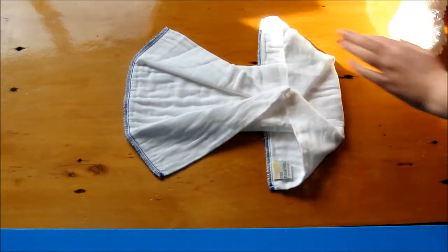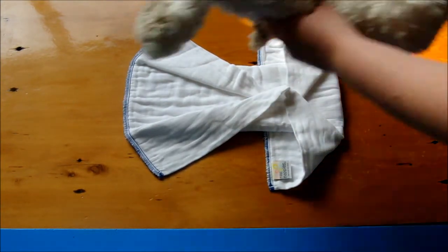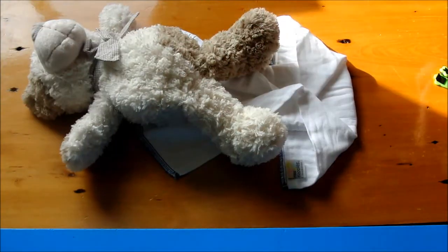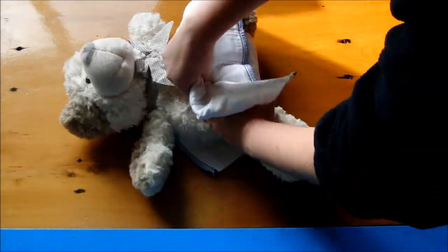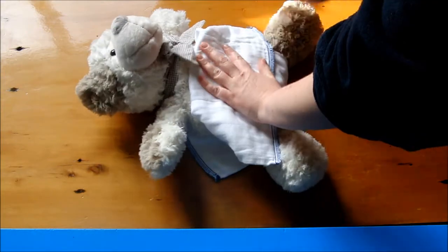Next we place a child—this is going to be my child today, it's my son's teddy bear. Place them in the middle and bring that up between the legs. Now there's two options for this.